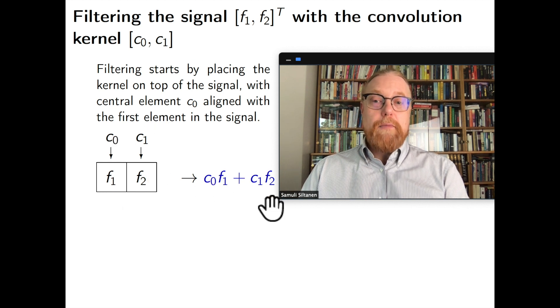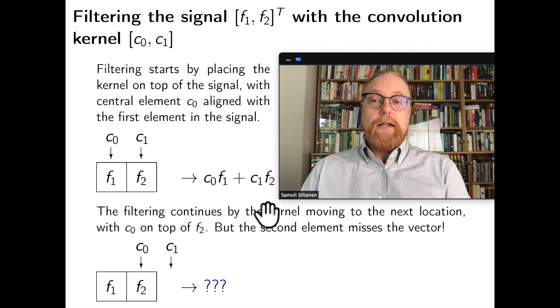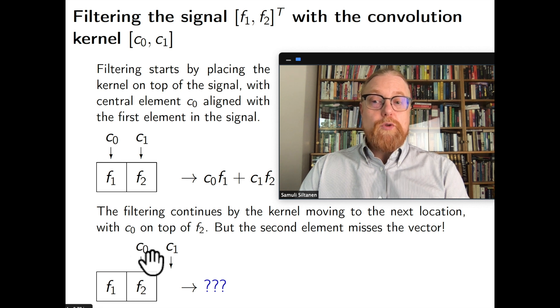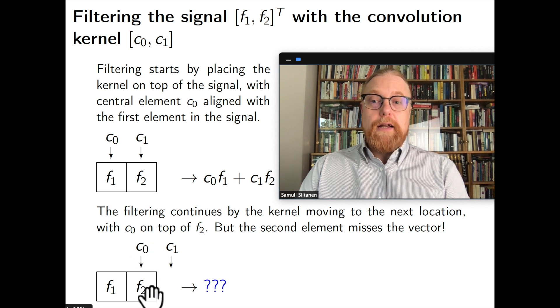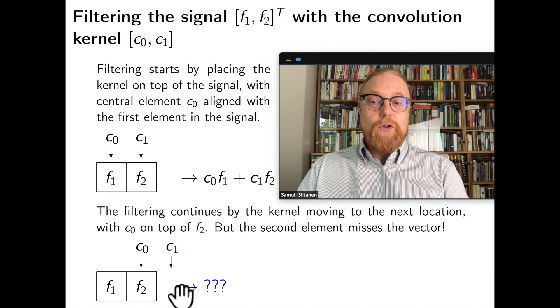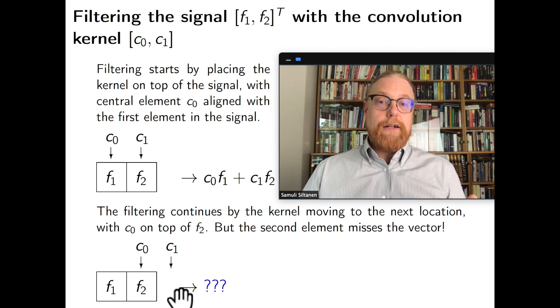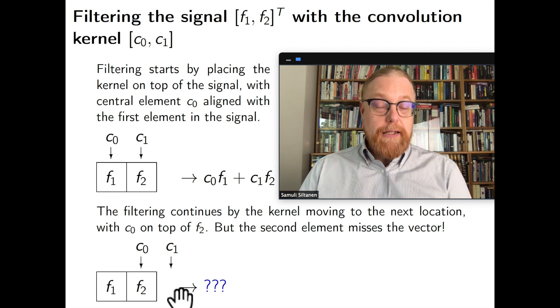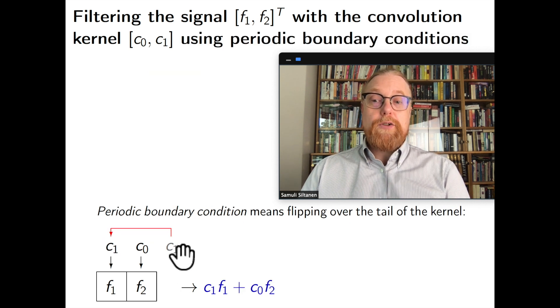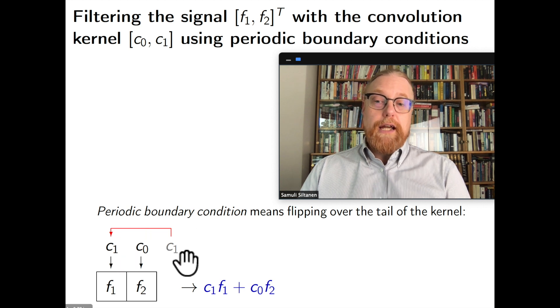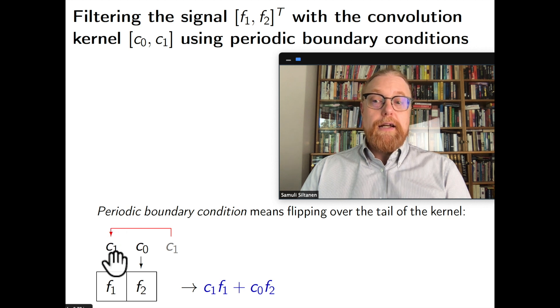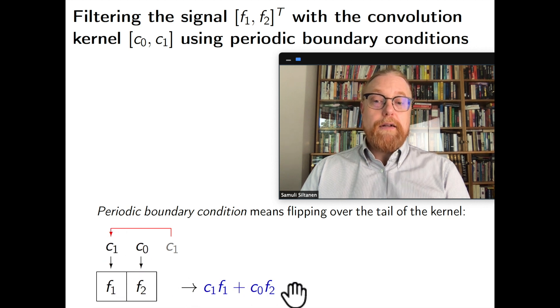We multiply this one, we multiply this one and sum and we get this result. And then the filtering continues. The filter moves one step so that now the central element C0 is on top of F2 and now our signal is so short that already at this point C1 falls outside our signal. So what should we do? There are many possibilities. We will be using the so-called periodic boundary condition where we just flip whatever is over the end of the signal.